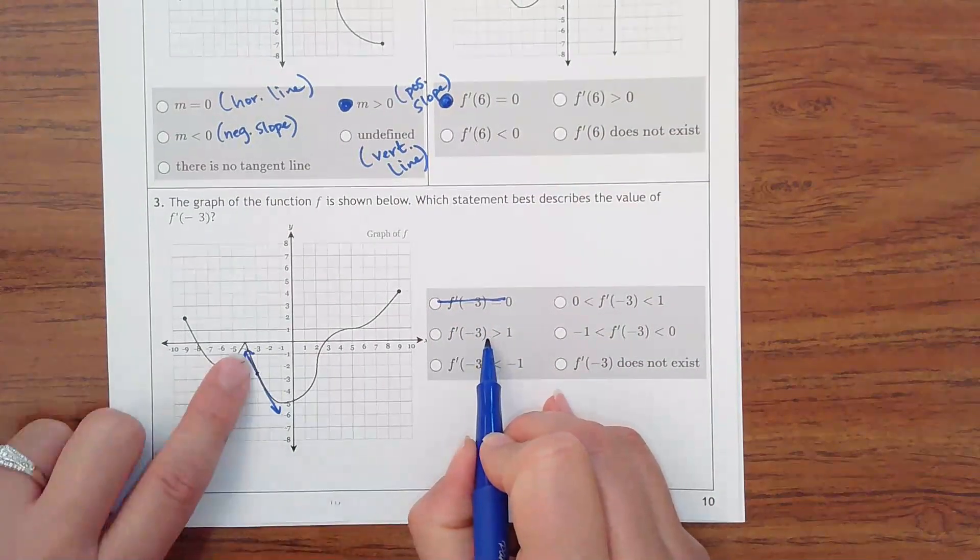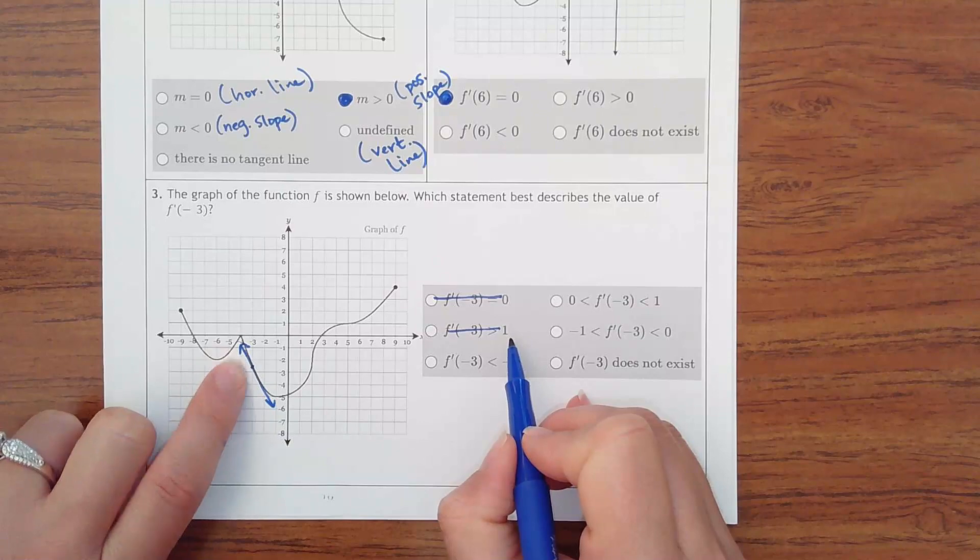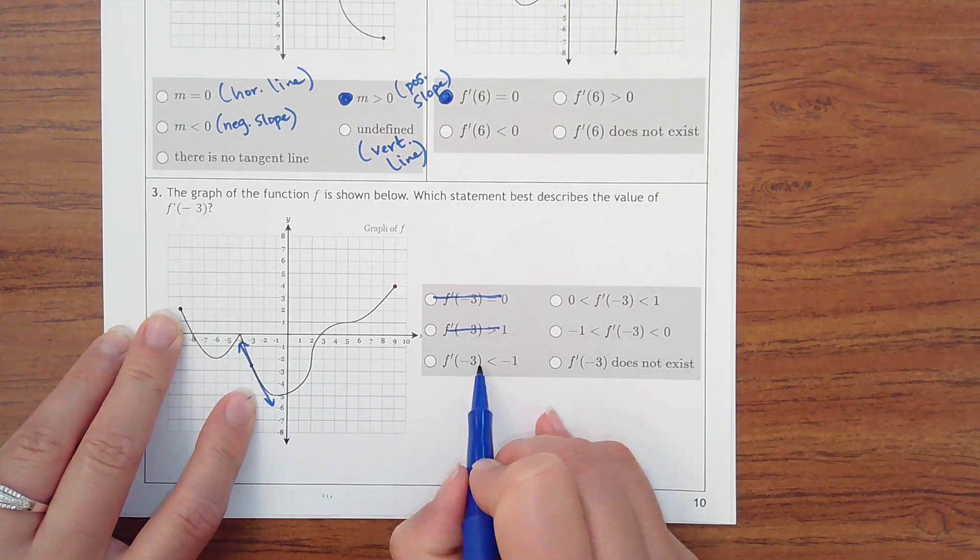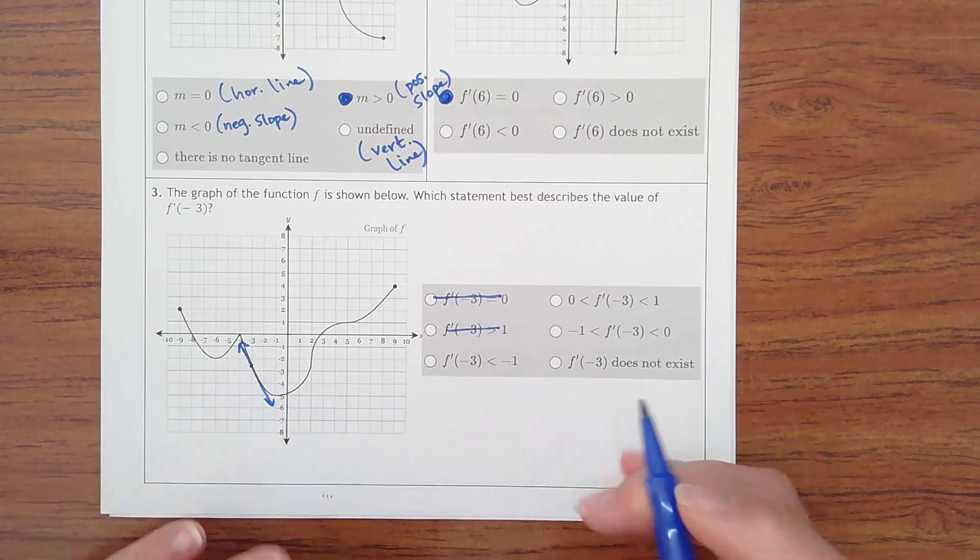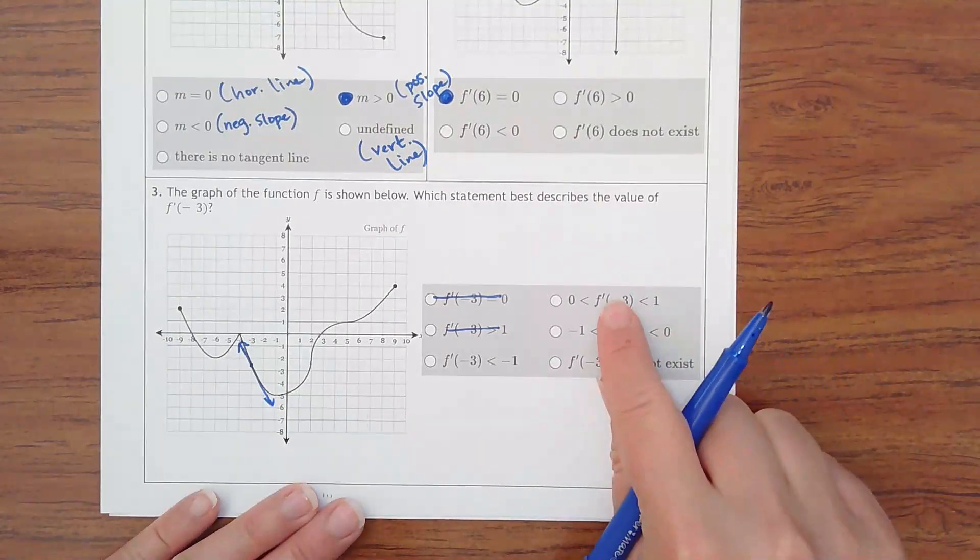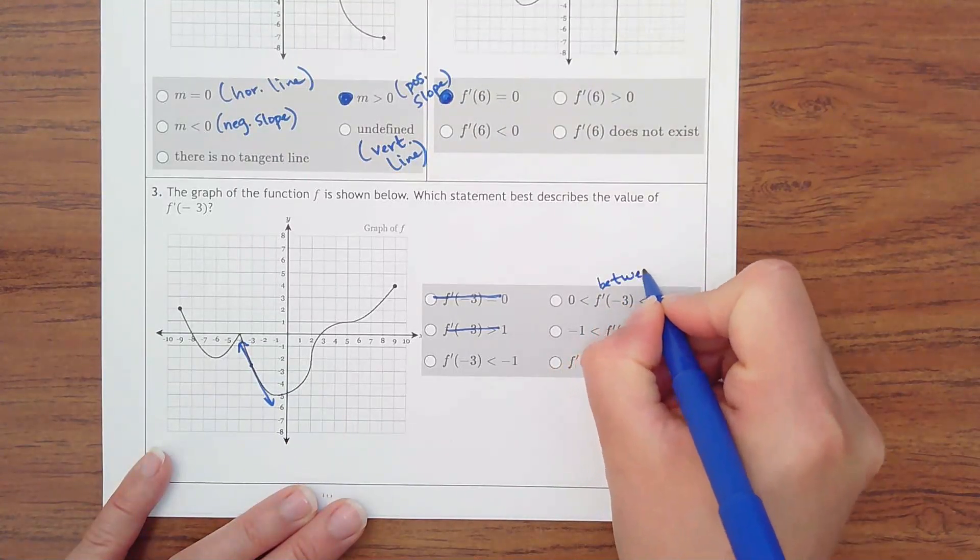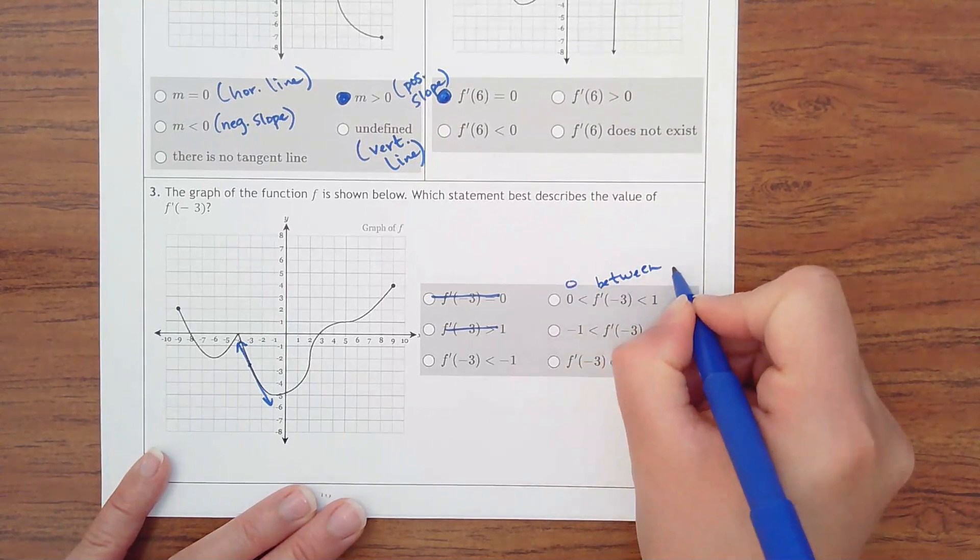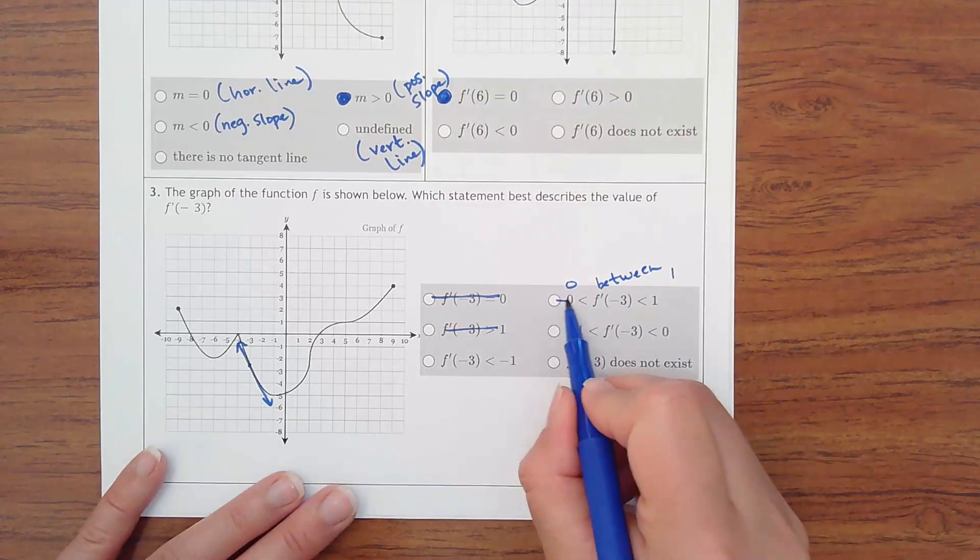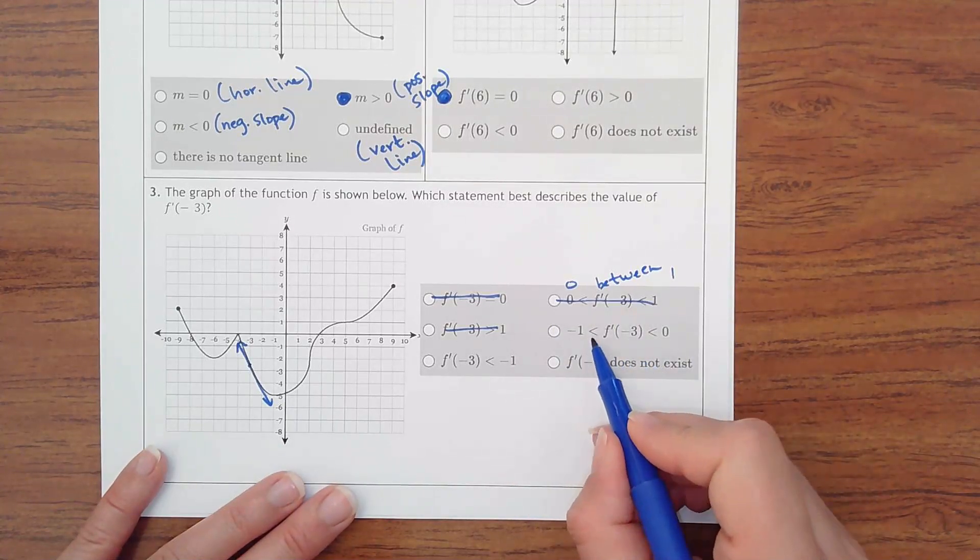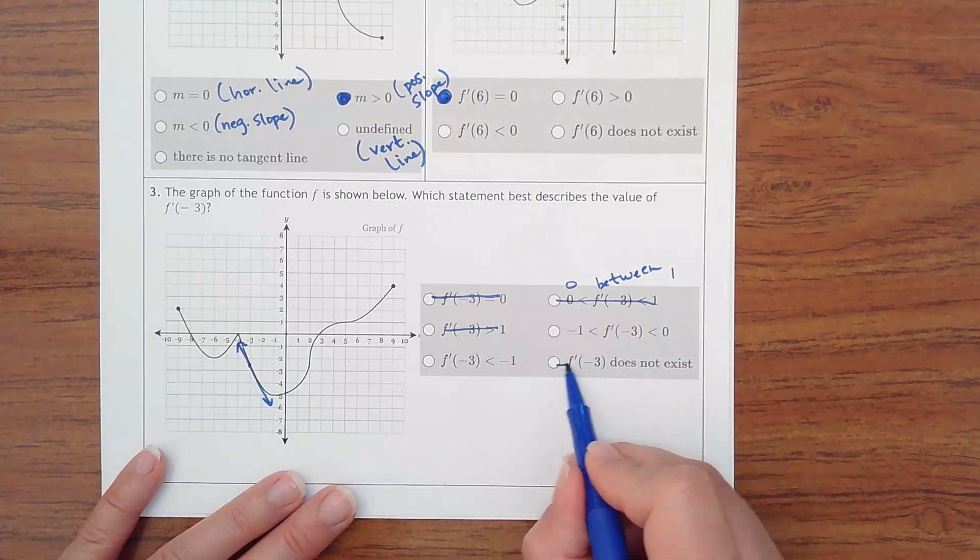Is it positive slope? No. Or greater than 1? No. Is it less than negative 1? Possibly, because I know it is negative slope. Is the slope between 0 and 1? No, because it's negative. Is it between negative 1 and 0? Possibly, because it is negative. Does it not exist? Not true.